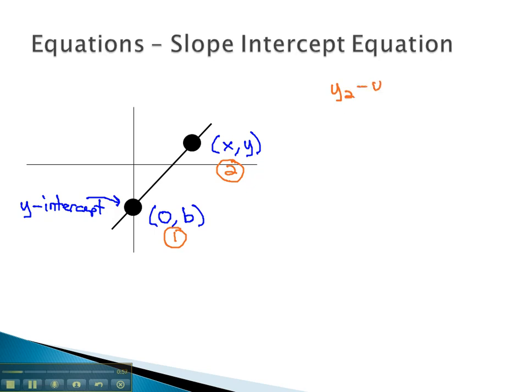We know that y2 minus y1 over x2 minus x1 equals the slope. By plugging these values in, y2 is just y, minus y1 is b, or the y-intercept, over x2, which is just x, minus x1, which is 0, equals m, or the slope.